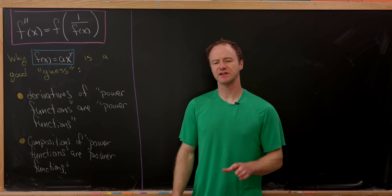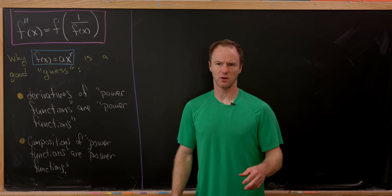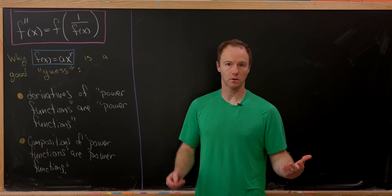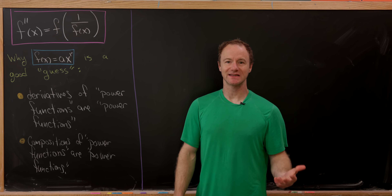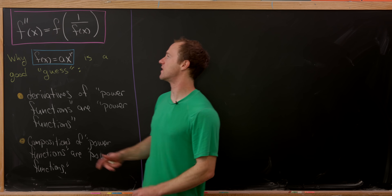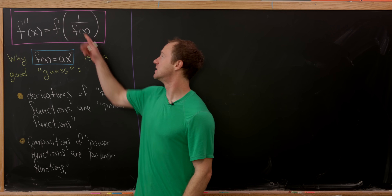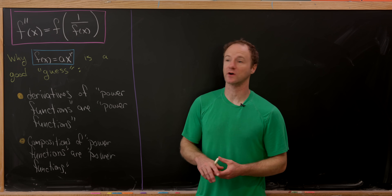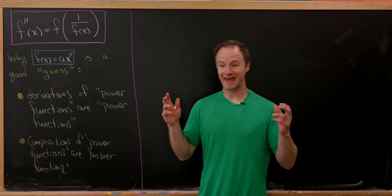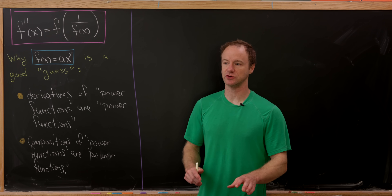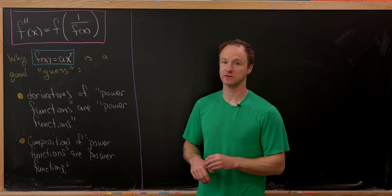Today we're going to look at a couple of interesting compositional differential equations and explore when they have nice solutions, or maybe when they have solutions at all. As a test case we're going to start with the second derivative of f(x) equals f composed with 1 over f(x). We're going to use this method of guessing the format of a solution and then tweaking the parts of that format until we actually have a solution.